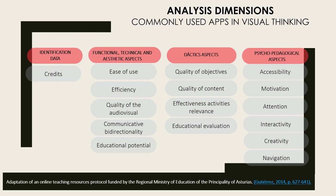The categories include: identification data — credits are important; technical criteria such as usability and easy handling, effectiveness and efficiency of the platform, and its educational potential; didactic criteria — that objectives are identified, the purpose of the application, the quality of content, that activities are effective, and that evaluation is potentially educational; and psychopedagogical criteria such as accessibility, motivation, attention, interactivity, or creativity of the platform. The exact citation is indicated at the foot of the table: Gutierrez, 2014, pages 627–641.